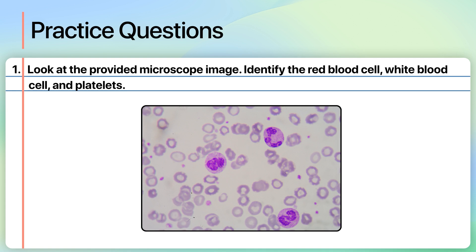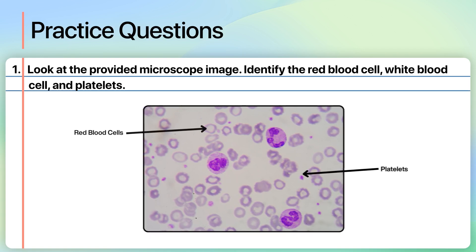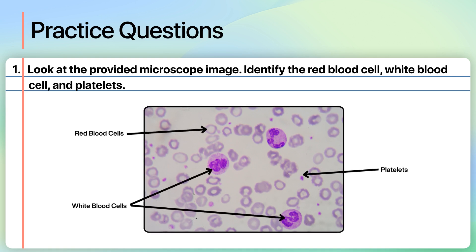Now let's walk through the answer together. We must be able to recognise the key shapes and sizes. These are platelets, which are cell fragments without a nucleus. These are red blood cells — they are disc shaped and lack a nucleus. These are white blood cells. They are larger than red blood cells and contain a nucleus, and they often have an irregular shape. This information can help us correctly label the provided diagram.